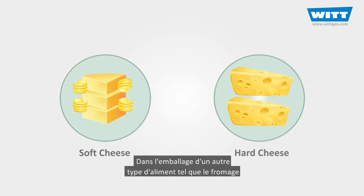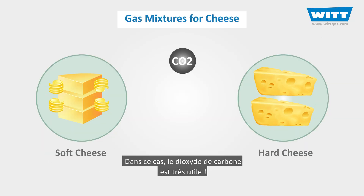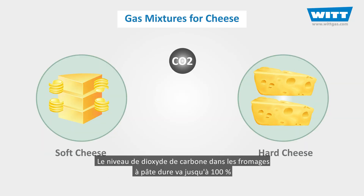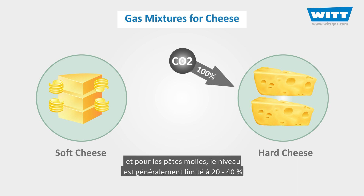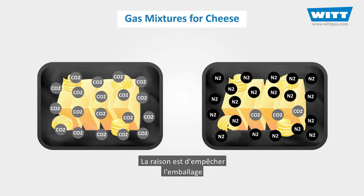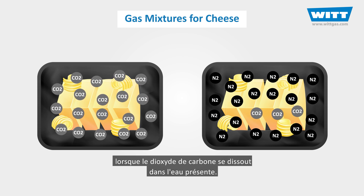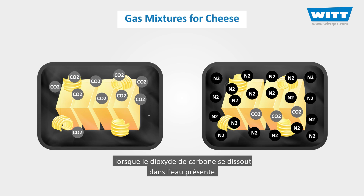In the packaging of some other types of foods, such as cheese, the mixture is completely different. In this case, carbon dioxide is used first and foremost. The carbon dioxide level in hard cheese packages is up to 100%, and for soft cheeses the level is usually restricted to 20 to 40%. The reason for this is to prevent the package from collapsing under atmospheric pressure as the carbon dioxide dissolves into the water content.